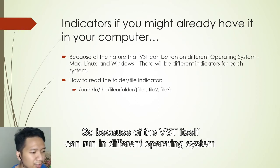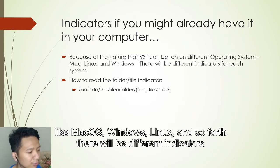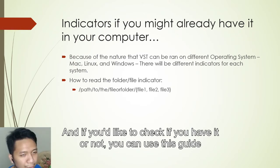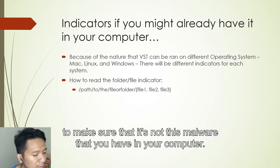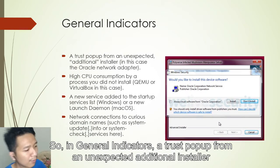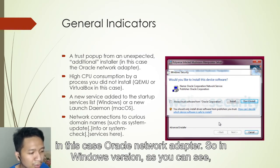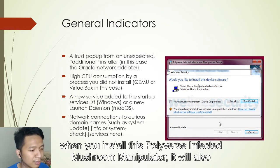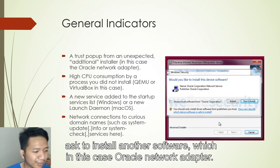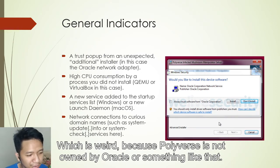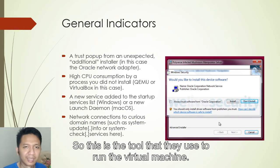For indicators that you might already have this on your computer: since the VST itself can run on different operating systems — macOS, Windows, Linux — there will be different indicators for each. In general, watch for a trust pop-up from an unexpected additional installer — in this case, Oracle Network Adapter. For example, when installing Polyverse Infected Mushroom Manipulator, it will also ask to install Oracle Network Adapter, which is strange since Polyverse is not owned by Oracle. This is the tool they use to run the virtual machine.